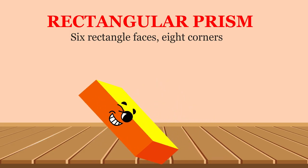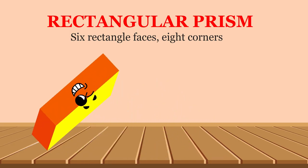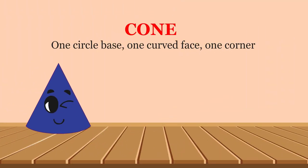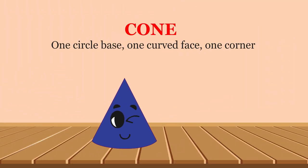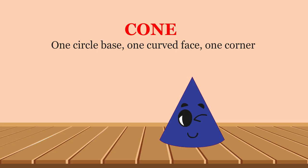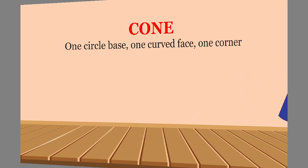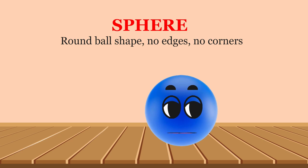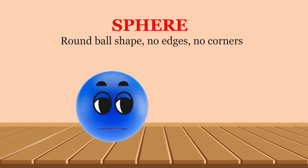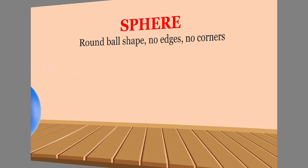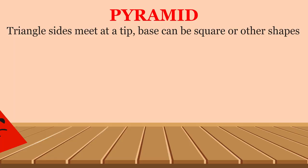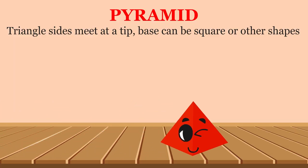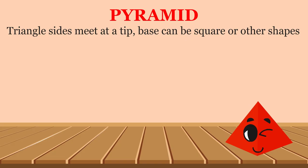Cuboid: six rectangle faces, eight corners. Cone: one circle base, one curved face, one corner. Sphere: round ball shape, no edges, no corners. Pyramid: triangle sides meet at a tip, base can be square or other shapes.